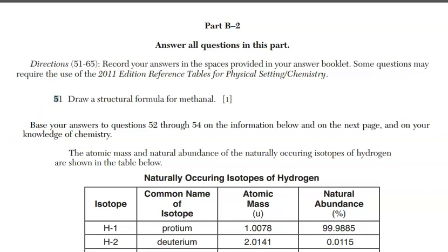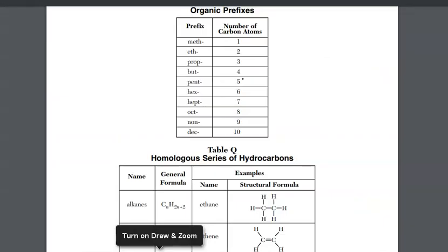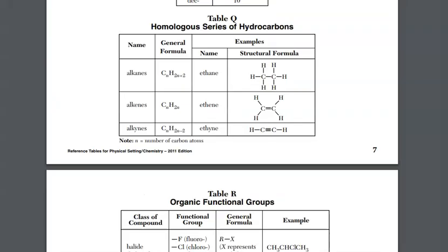Do that right now. For meth, meth means one carbon atom. An AL ending is going to tell me that I have a functional group. If it was just carbons and hydrogens, better known as hydrocarbons, it would have had an ANE, ENE, or YNE ending. But the ending is AL.